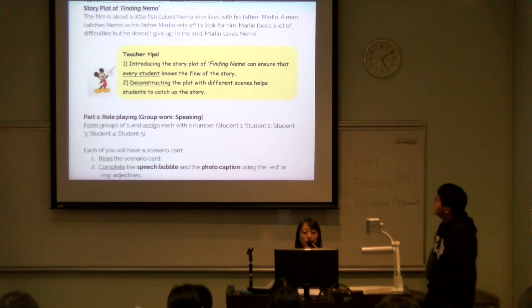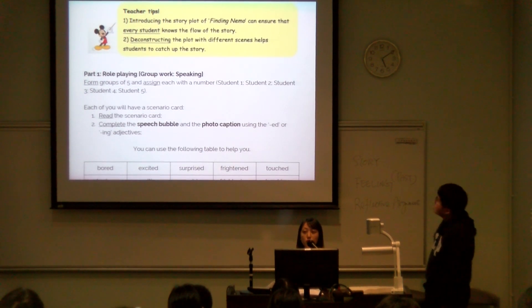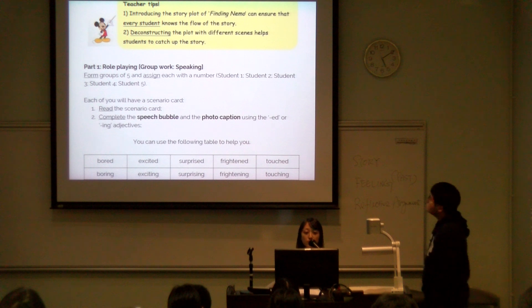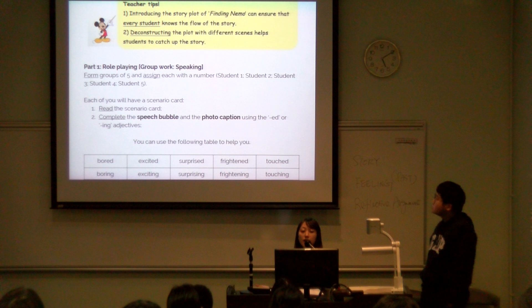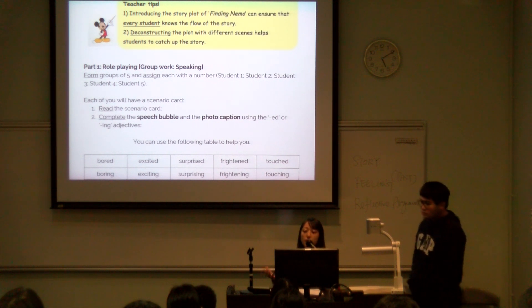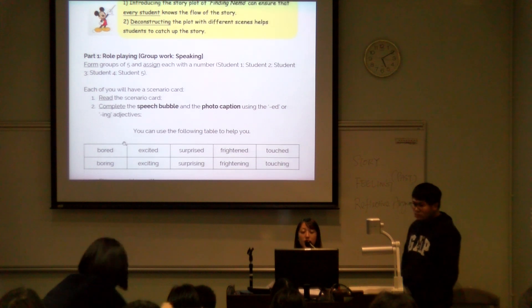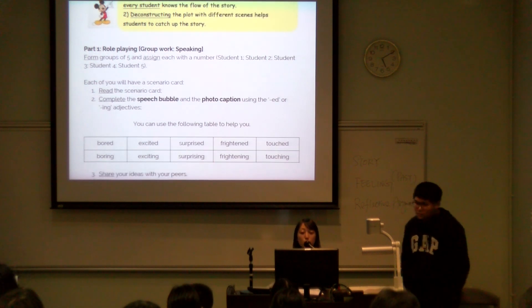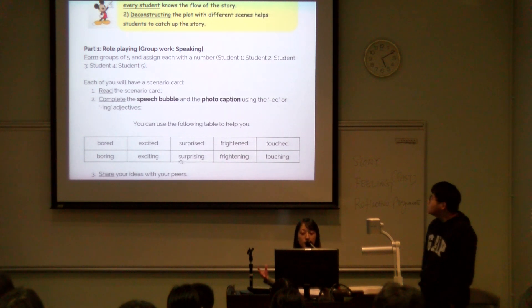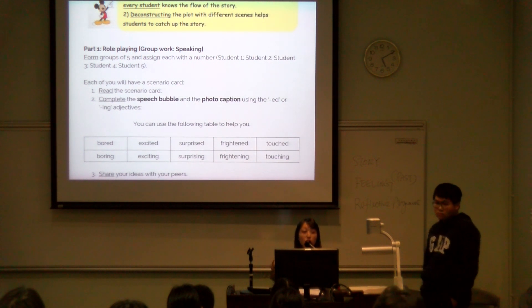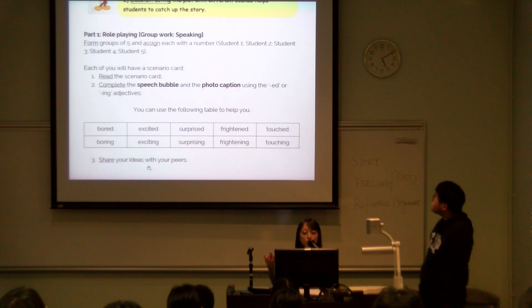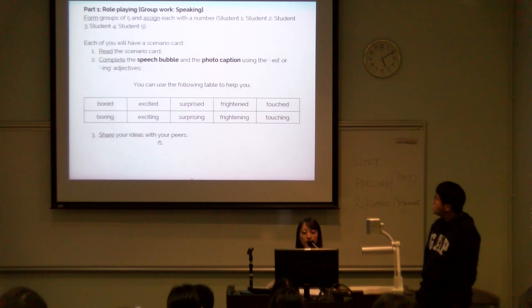For Part 1 of the output, we will do group work, which mainly focuses on speaking. We will form groups of five students and assign each student a number — 1, 2, 3, 4, 5. Each student will have a scenario card. Each student needs to read the scenario card and complete the speech bubble and the photo caption by using the -ed or -ing adjectives. We will provide a table to help them with word choices, but if they are confident with their own words, they are welcome. For the last part, they will share ideas in the group.